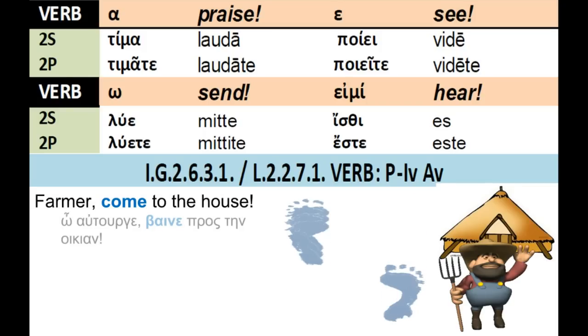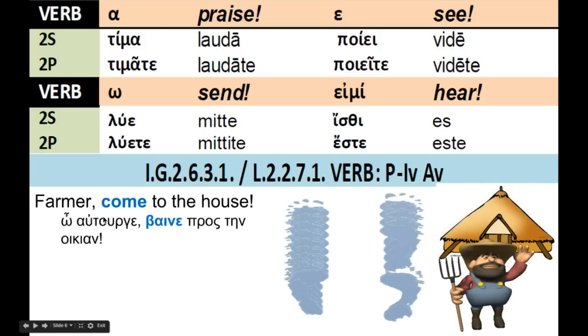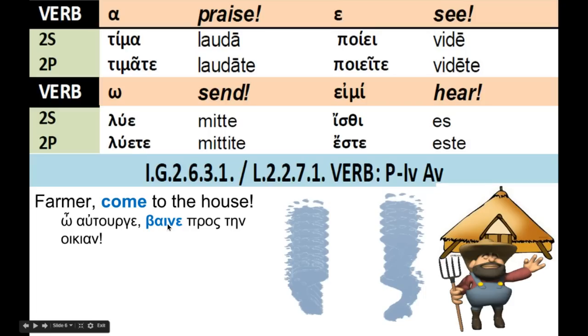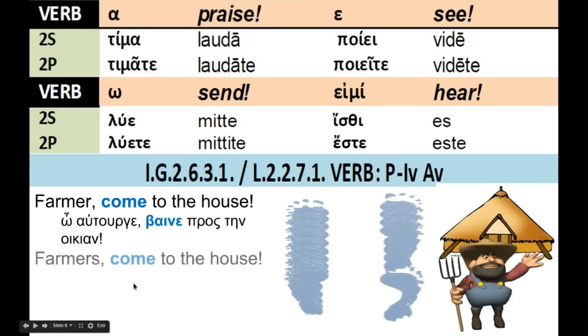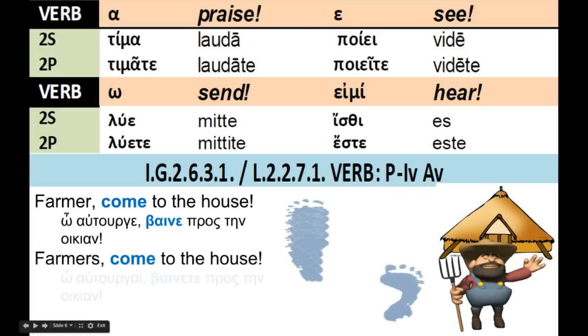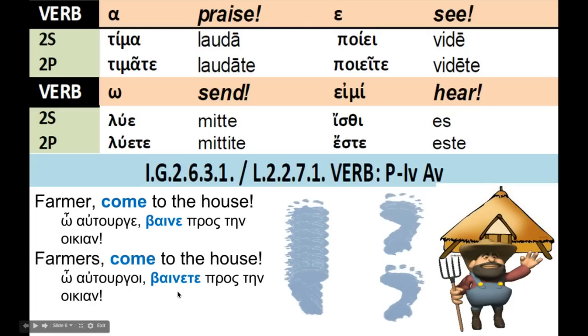Farmer, come to the house. 'O a-turge' — notice vocative — 'baine,' come to the house. Farmers, come to the house. You're talking second plural: baine-te.